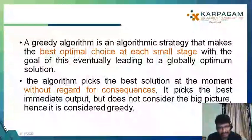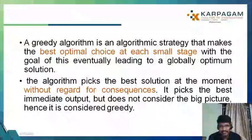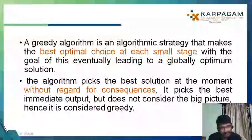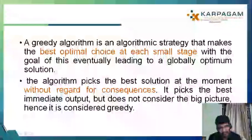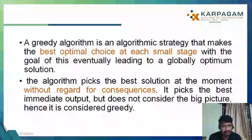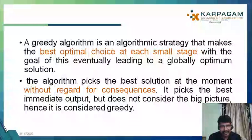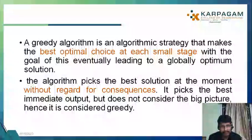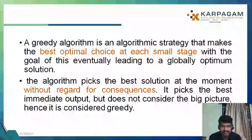If we dig deeper into what a greedy method really is, it is a strategy where the best optimal choice at each small stage is taken, and it should eventually lead to a global optimal solution. We hope for that, and it might happen most of the time or it might not happen at some point. That's why we say greedy method will not always give the optimal solution. The algorithm picks the best solution at the moment without seeing any other consequences — it chooses the best immediate possible output available and will not see the bigger picture or the consequences that might happen at a later stage.